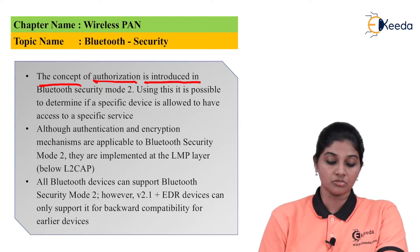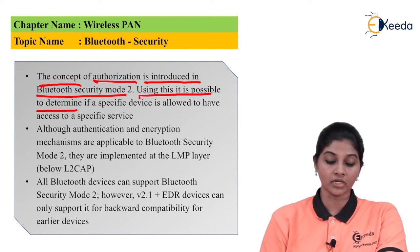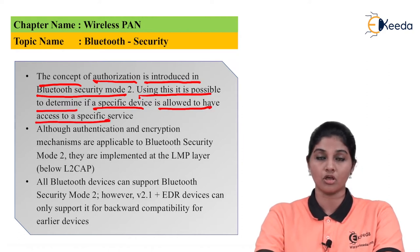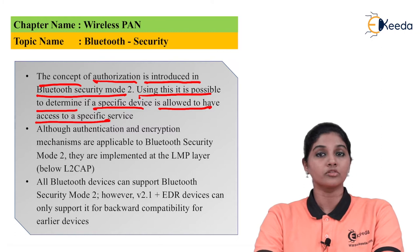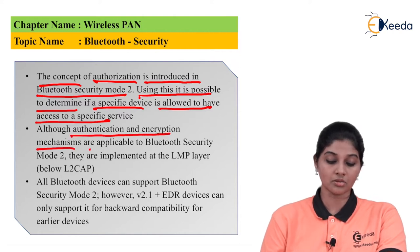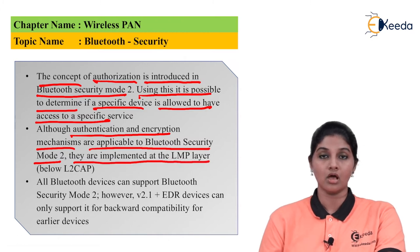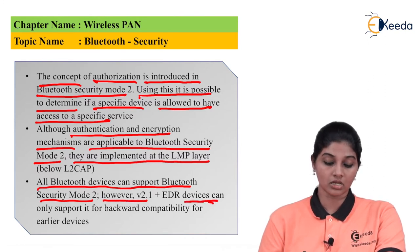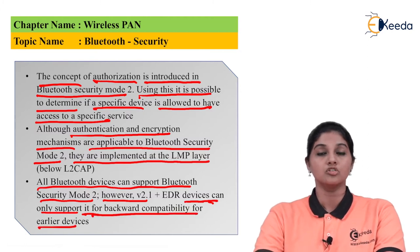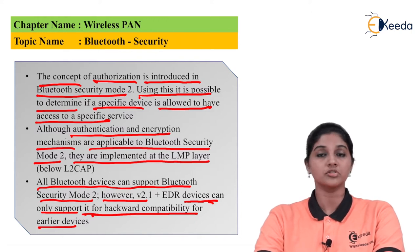The concept of authorization is introduced in Bluetooth security Mode 2, making it possible to determine if a specific device is allowed to access a specific service. Authentication and encryption mechanisms are applicable to Mode 2 and are implemented at the LMP level, making this a secure mode of communication. All Bluetooth devices can support Mode 2; however, version 2.1 and EDR devices can only support backward compatibility for earlier devices.